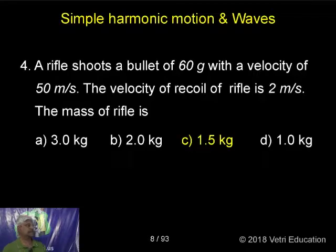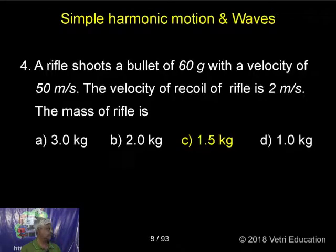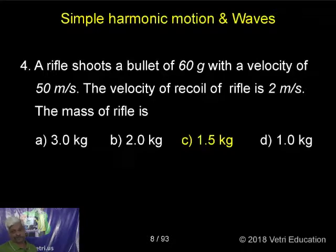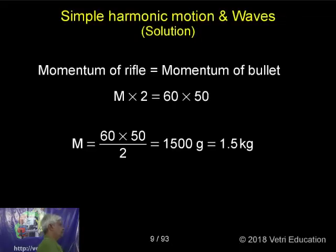A rifle shoots a bullet of 600 grams with a velocity of 50. The velocity of recoil of the rifle is 2 meters per second. This is a linear momentum conservation problem, where M1V1 is equal to M2V2.